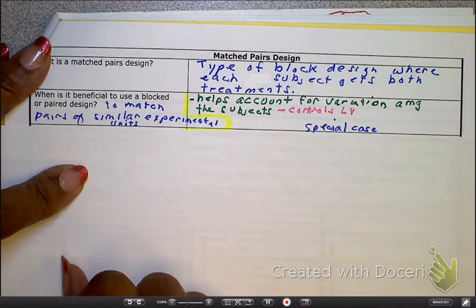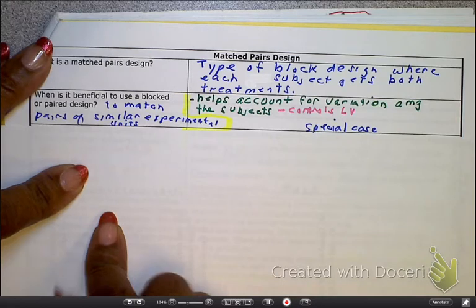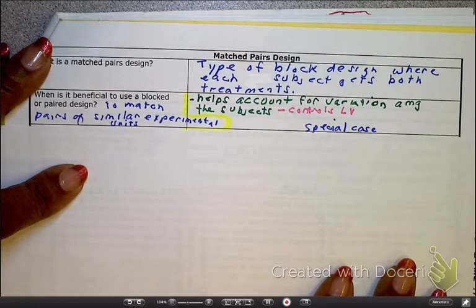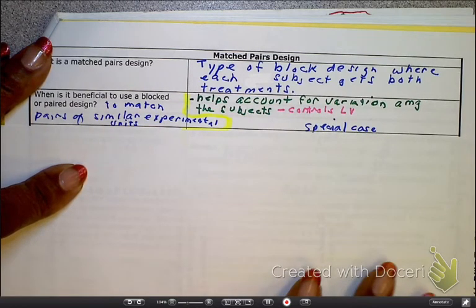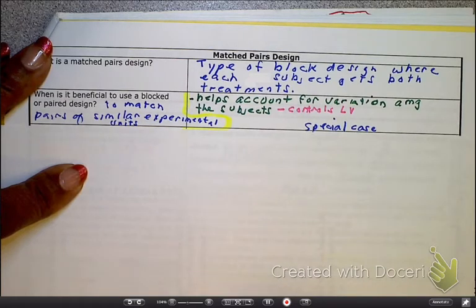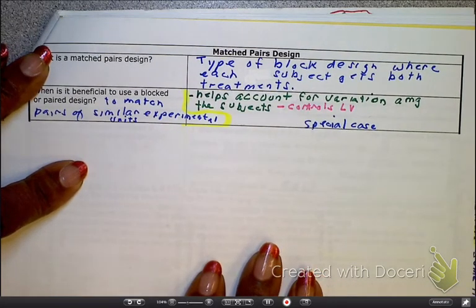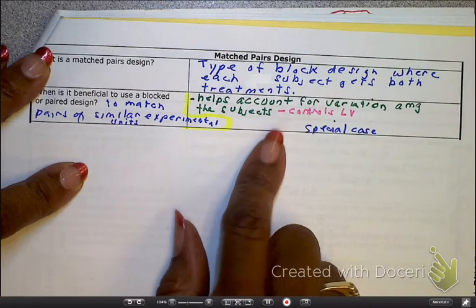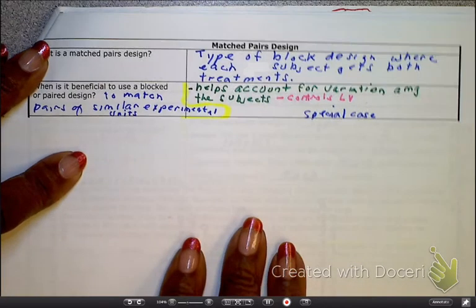So the example that I just gave was male versus female in terms of the exercise physiology class. And with the physical therapy, it would be the same thing - male versus female. And I would say even with that, a block that I would go into is age groups because my knees don't do what they used to. So that's a prime example of accounting for variation between subjects and it takes even more control of the lurking variables.